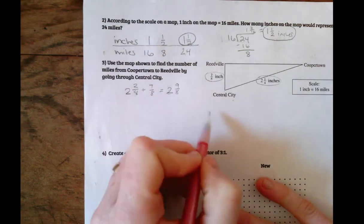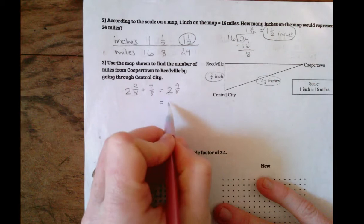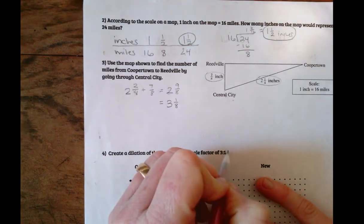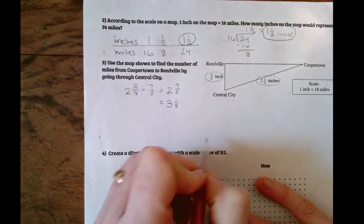Nine eighths, that's one and one eighth. So this is three and one eighth, because nine eighths is one and one eighth.